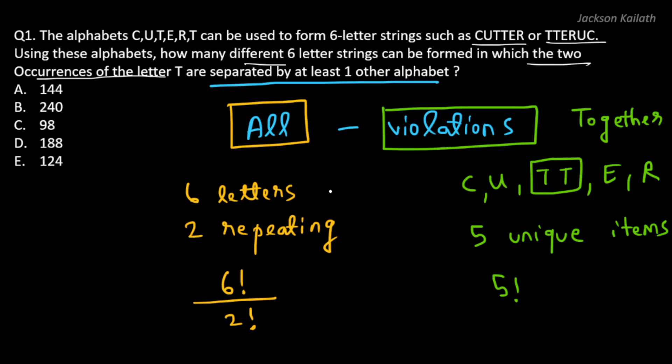So we have found both of these. Now to find the answer, all we need to do is 6 factorial divided by 2 factorial minus the violations, which is 5 factorial. Now let's take out 5 factorial. So this would be equal to 5 factorial times 6 divided by 2 factorial minus 1, because 2 factorial is nothing but 2 itself, and from 6 factorial, if you take out 5 factorial, you're left with 6, because 6 factorial is 6 times 5 factorial.